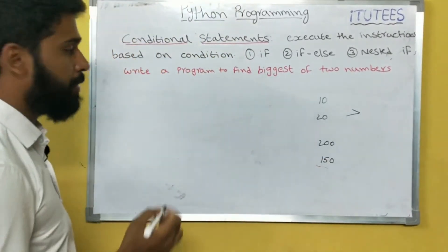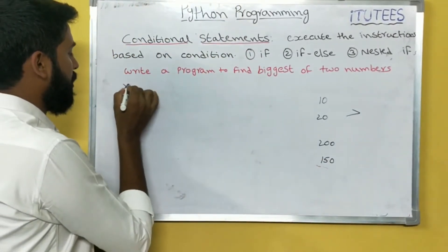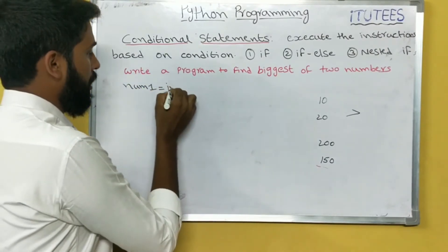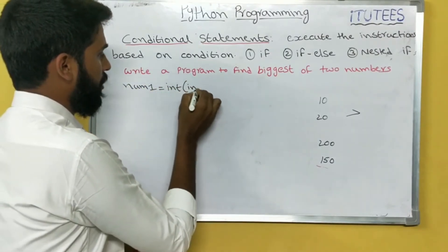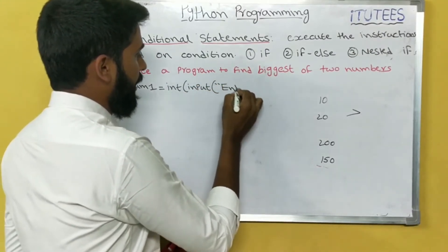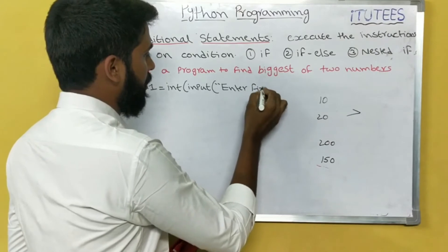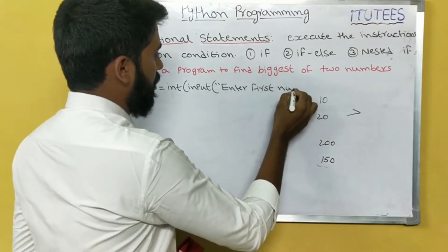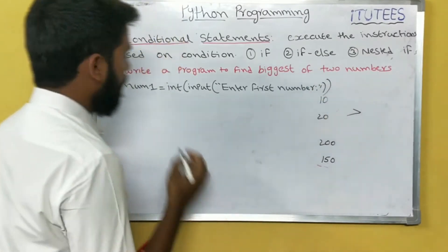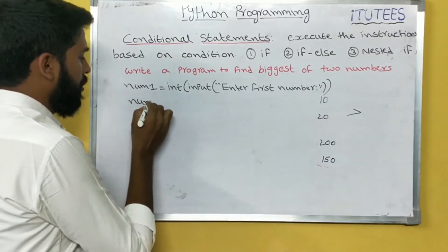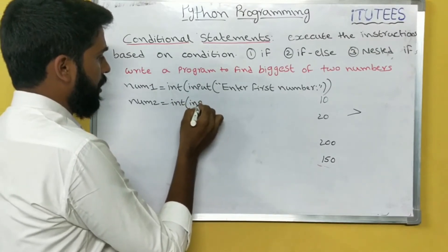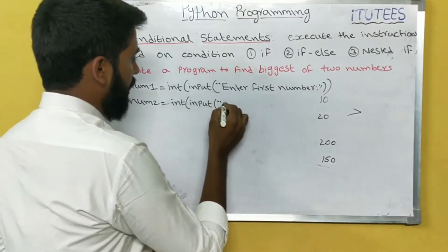Now you can write the program. We are taking 2 numbers: number1 equals int(input('Enter first number')), and number2 equals int(input('Enter second number')).